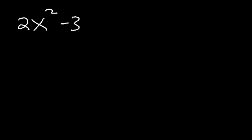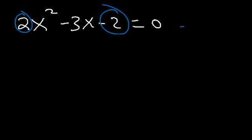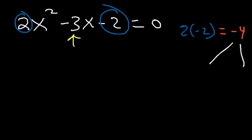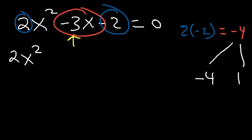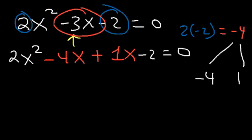Now what do you do if the leading coefficient is not 1? Let's say we want to factor 2x squared minus 3x minus 2, and let's say it's equal to 0 — how can we solve for x? The first thing you need to do is multiply the first and the last term: 2 times negative 2 equals negative 4. So we need to find two numbers that multiply to negative 4 but add to the middle term negative 3. That's going to be negative 4 and 1. We're going to replace the middle term negative 3x with negative 4x plus 1x, and then factor by grouping.